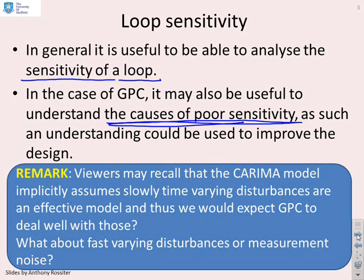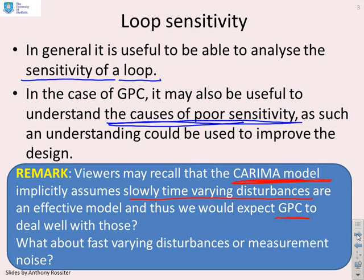The Carima model, which we've focused on mostly with GPC, assumes slowly time-varying disturbances within the model — that was how we represented disturbances with this integrated white noise. Therefore, you'd expect GPC to be quite effective at dealing with slowly time-varying disturbances, because that's built into the model. However, what would you do if you had fast-varying disturbances or measurement noise, because you might argue that the model hasn't really taken account of those explicitly.